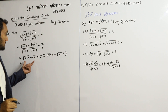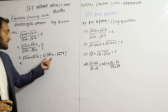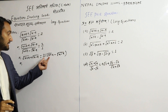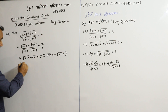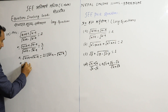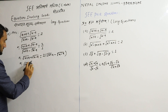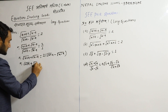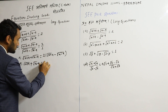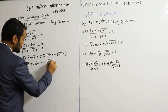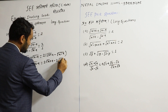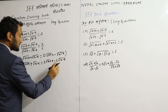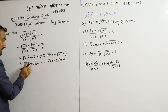So root(x + 4) here, root(x + 4), so root(x + 4) into plus root(x − 4), just equal to 2·root(x + 4) minus 2·root(x − 4). Okay, so here we go.